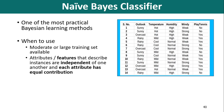Further, each feature is given the same weight or the same importance. For example, knowing only the temperature and humidity alone cannot predict the outcome accurately. So every attribute — outlook, temperature, humidity, and windy — has equal weight or the same importance. None of the attributes is irrelevant, and all are assumed to contribute equally to produce the outcome.